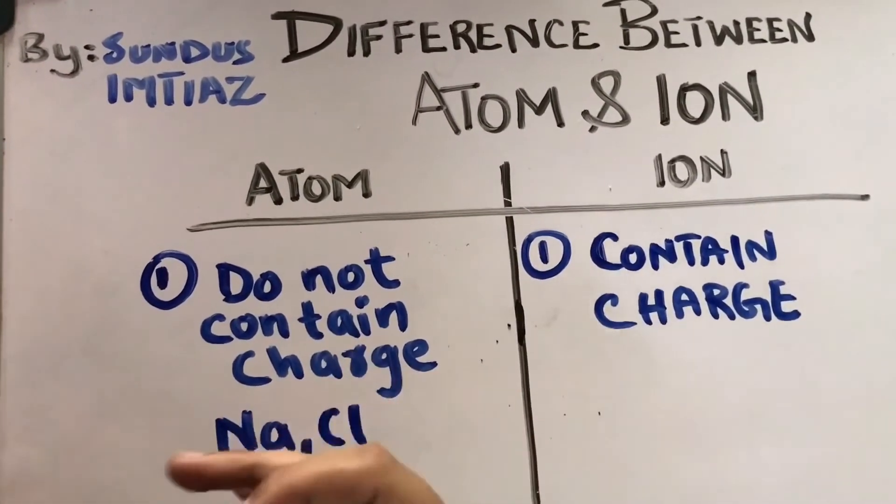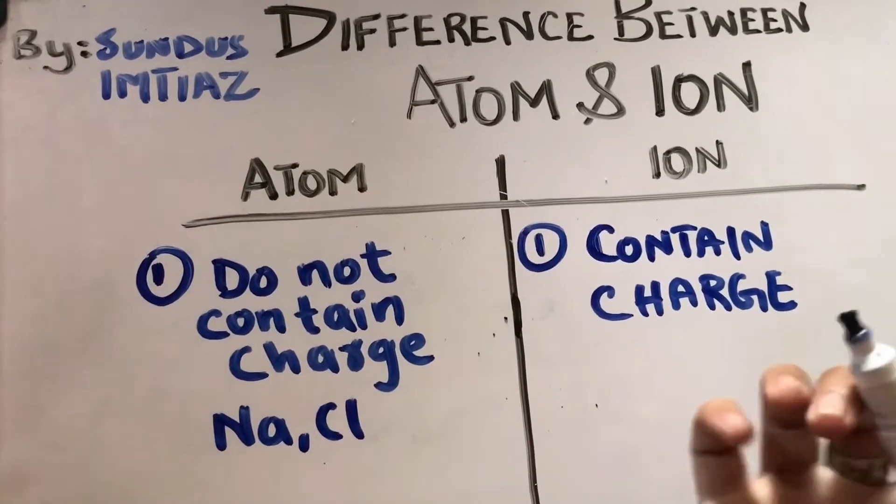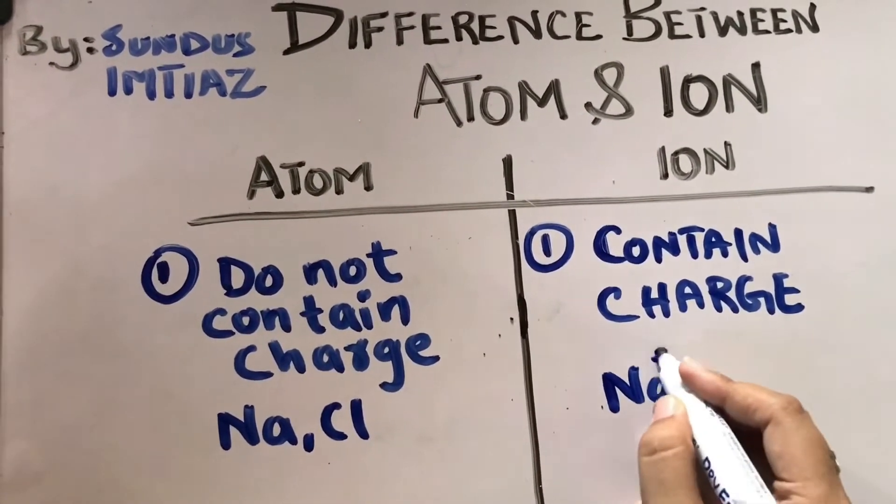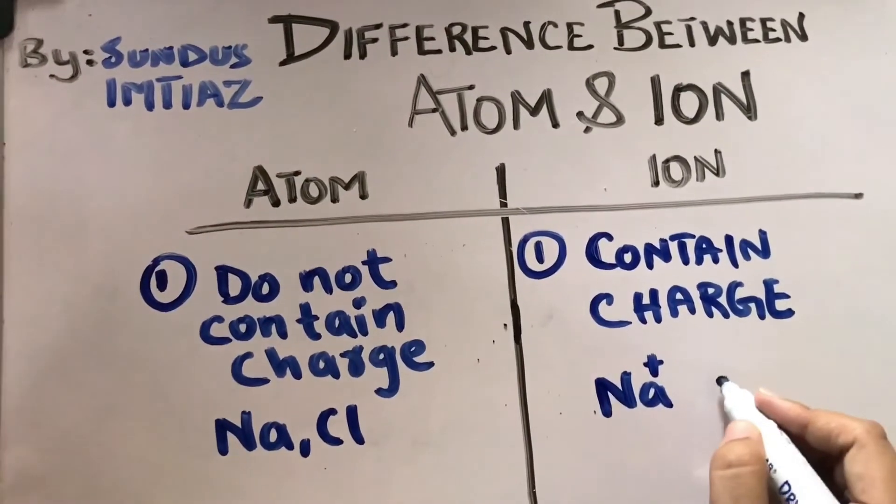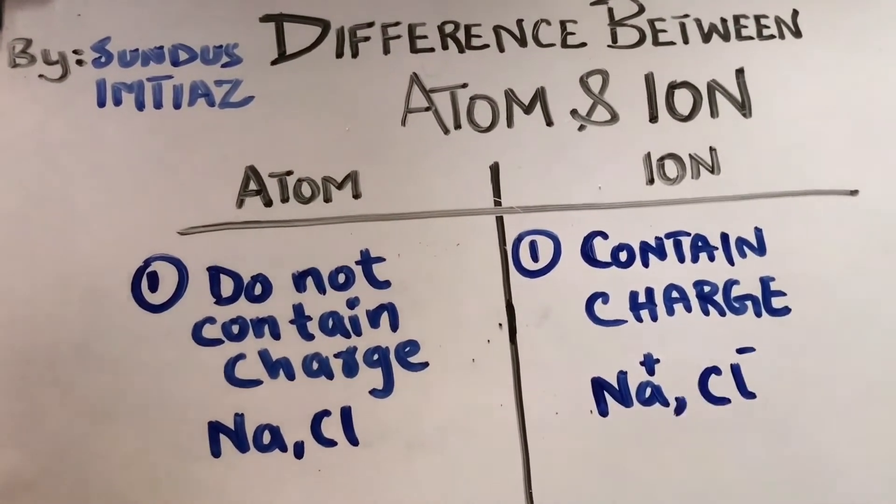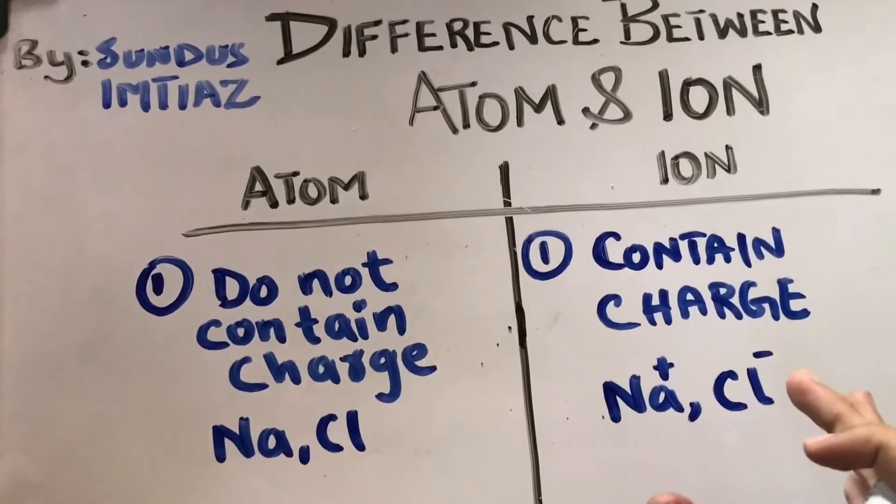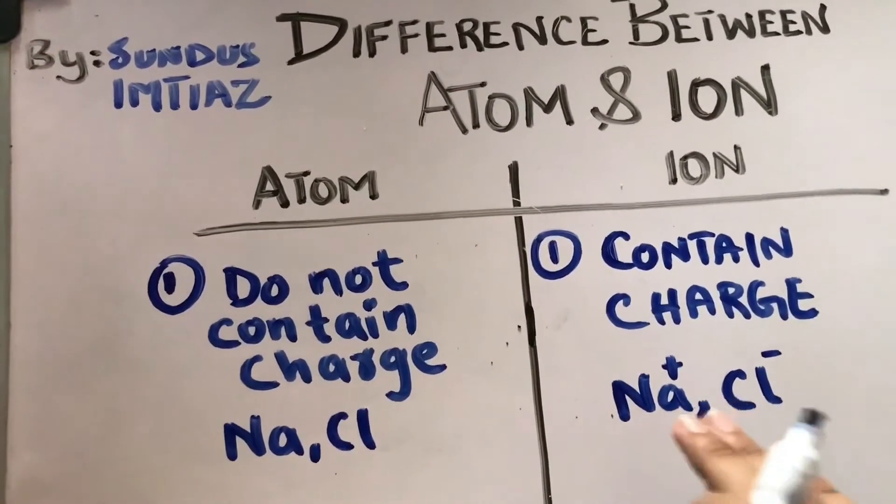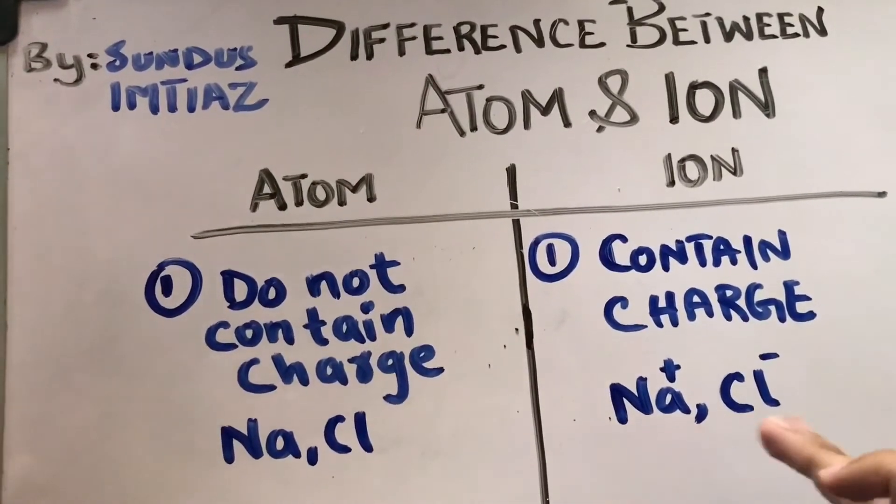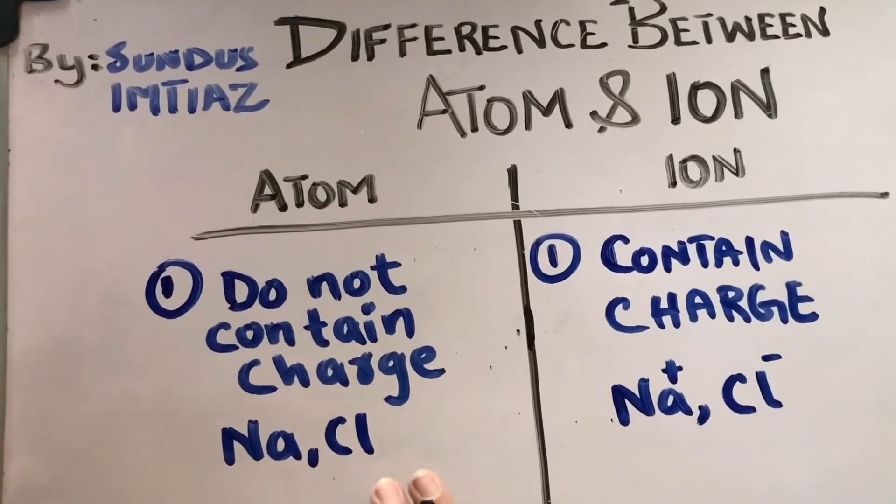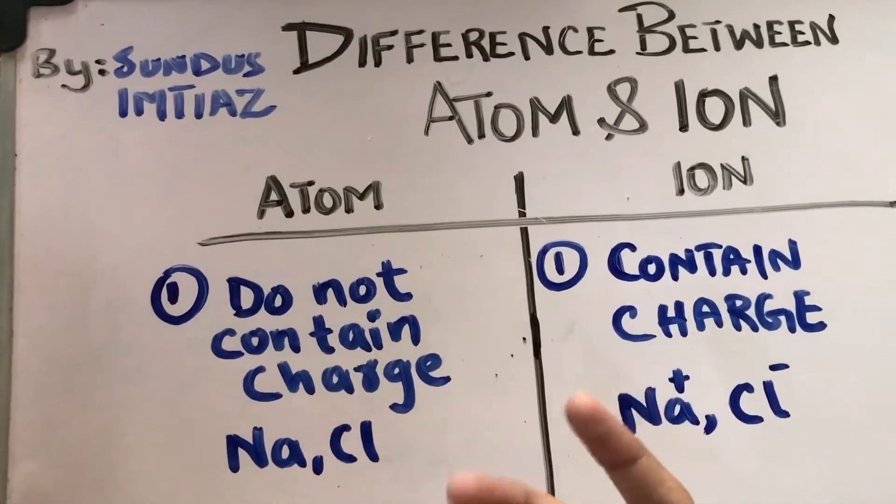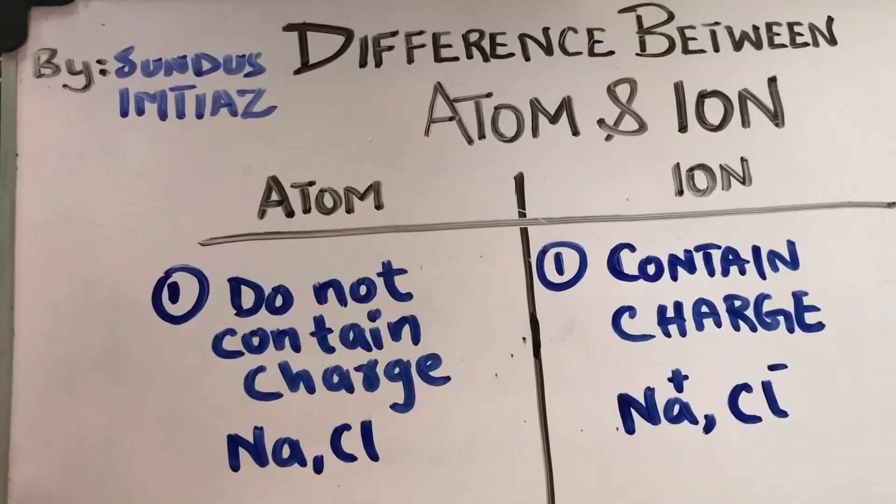but if I go to ion, if I go to ion, Na with a positive sign or Cl with a negative sign, we can say that it is not an atom now, it is an ion. So ion is an element that contains charge, not neutral.